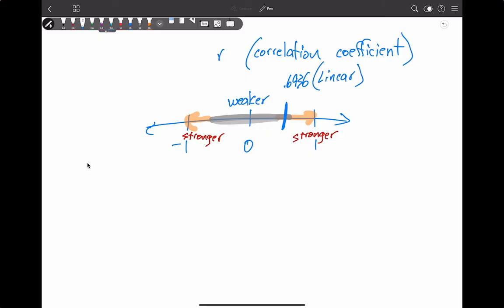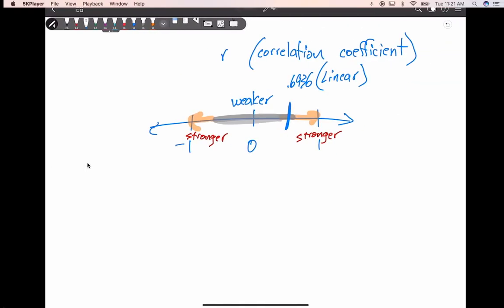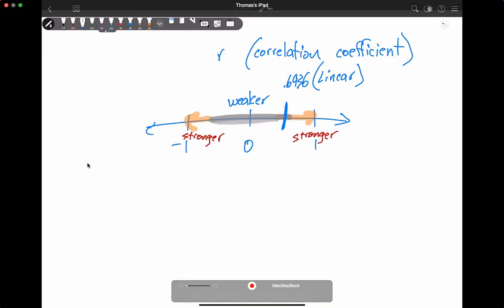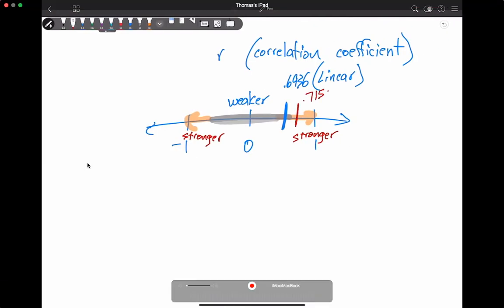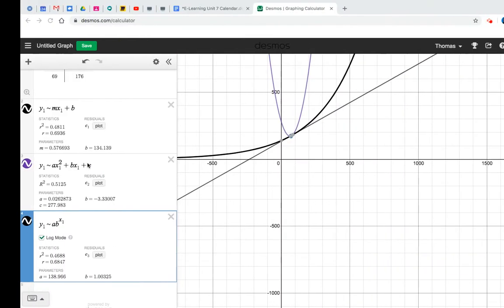If I want to look at the quadratic, I'm going to find R, which unfortunately is not here. So I'm going to have to take the square root of 0.5125. So let's take the square root of 0.5125. And there we go. So that one's a little bit stronger. So we have 0.7158 or 0.7159, which is closer. And this is the quadratic. So it's stronger. So far, it looks like it's going to be quadratic.